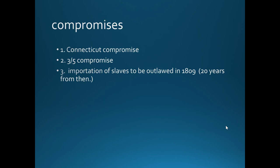Another compromise regarding slavery: the importation of slaves from Africa would be outlawed in 20 years — in 1809. That was a compromise. Slavery wasn't outlawed, but the importation of slaves would be outlawed 20 years from 1789.